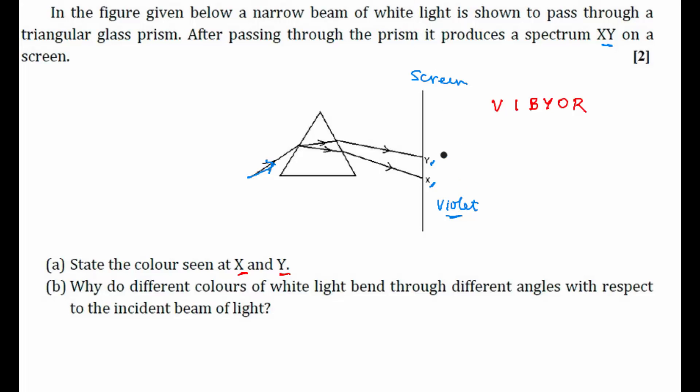And on the top, which color we will be getting? Red. So the color seen at X is violet and the color seen at Y is red. So this is the answer for first question. Color seen at X is violet and color seen at Y is red.